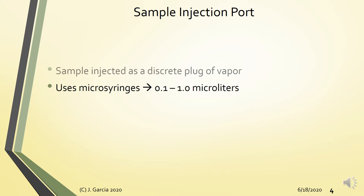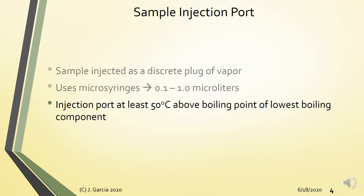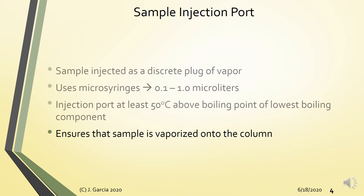There are also gas syringes for gaseous samples, which have larger volumes compared to liquid microsyringes. The injection port temperature is high enough to vaporize the sample, since it is important that the sample is in vapor form when it enters the column. Normally the injection port is set at least 50 degrees Celsius above the boiling point of the lowest boiling component in the mixture, to ensure the sample is completely vaporized before entering the column.